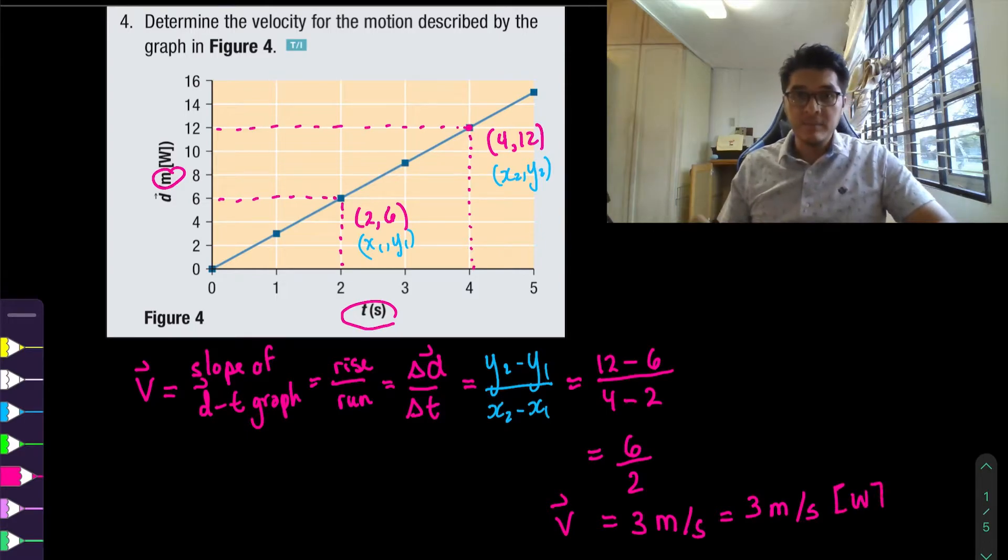So this is the same thing as 3 meters per second west. So again that's a small trick they're trying to confuse us. I might have confused you so please leave a comment and that way I can help you out and clarify this question at the very end.